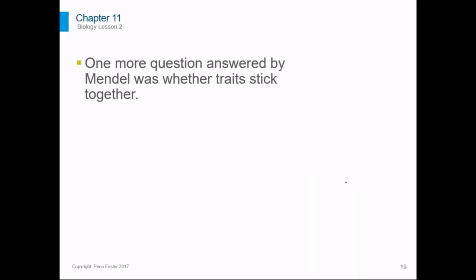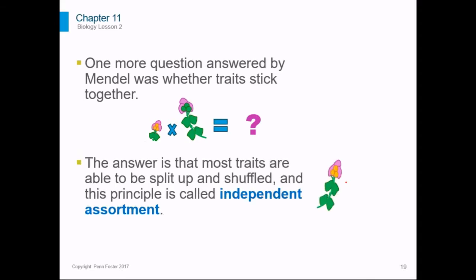One more question answered by Mendel's work was whether traits stick together. If he had tall plants with green seeds and short plants with yellow seeds, what would happen if he crossed them? Would the height and color traits stick together? Would it be possible to get tall offspring with yellow seeds? The answer is that most traits are able to be split up and shuffled, and this principle is called independent assortment. The genes for height and color can be split up, so you can end up having a tall plant with yellow seeds because you don't have to inherit both traits from the same parent together.